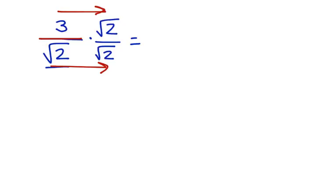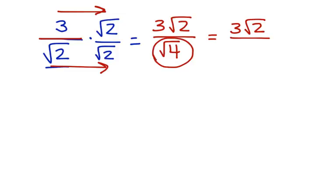3 times the square root of 2 is 3 square root of 2. Square root of 2 times the square root of 2 is the square root of 4. Now we simplify anything that we can. We can't simplify the 3 square root of 2. That stays like it is. But we can simplify the square root of 4 and that becomes 2. This is our final answer.